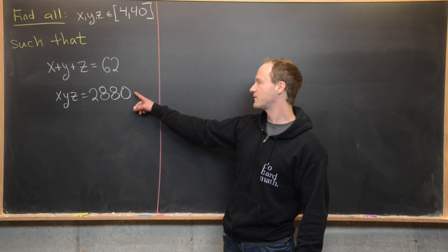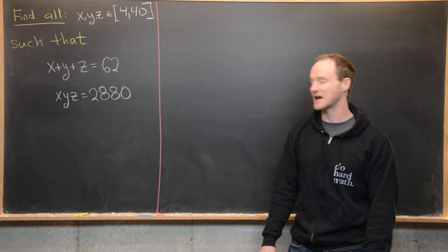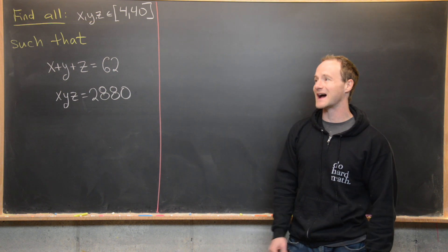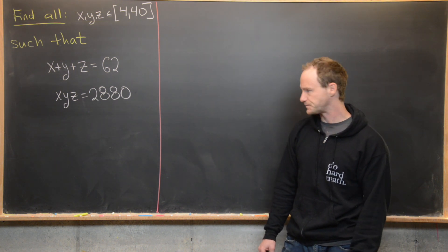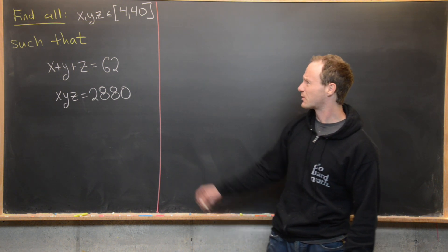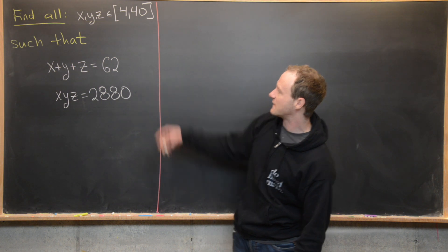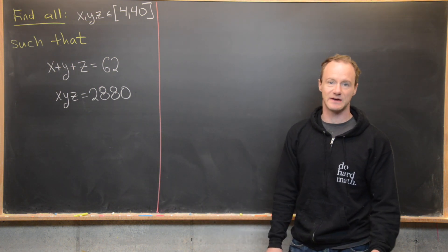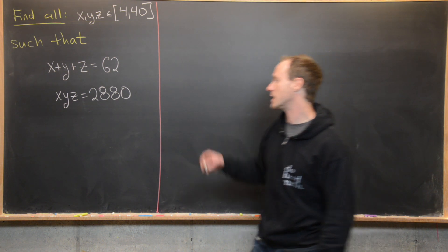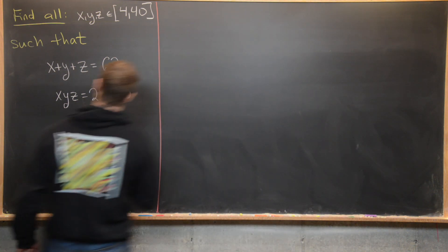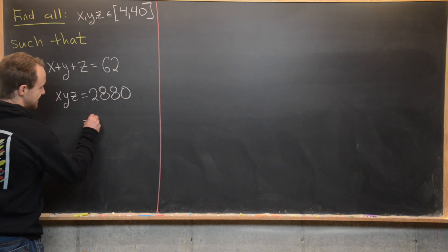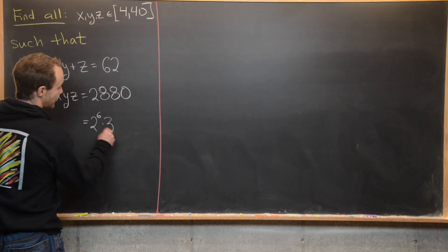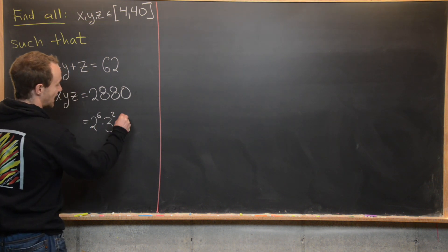Maybe the first thing to do is to factor 2880 as prime factors. We'll look for natural number solutions first. I think, just by the way this is constructed, we should expect there to be some natural number solutions. It's easy to check that 2880 equals 2 to the 6 times 3 squared times 5.